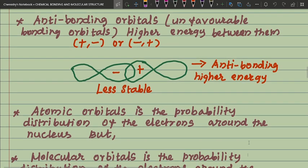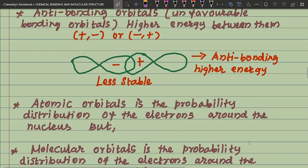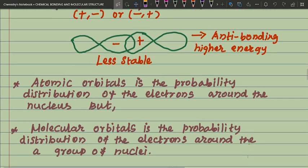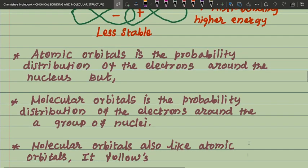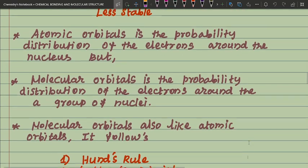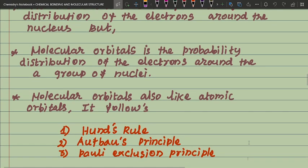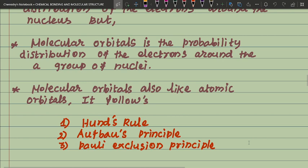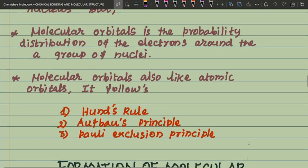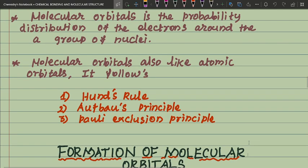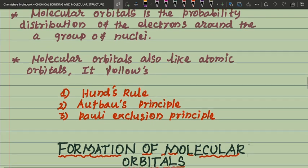An atomic orbital is the probability distribution of electrons around the nucleus. Molecular orbitals, like atomic orbitals, follow the same rules: first, Aufbau principle; second, Hund's rule; third, Pauli exclusion principle.